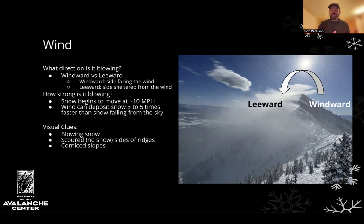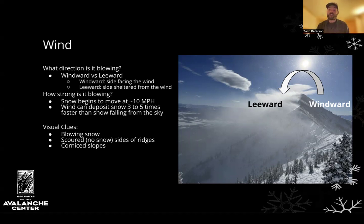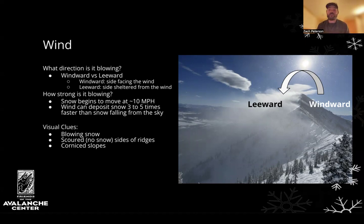Wind begins transporting snow at around 10 miles per hour and can actually deposit snow three to five times faster than snow falling from the sky. Similar to heavy snowfall, this increases the amount of weight on a potentially weak snowpack. Furthermore, wind-transported snow can be compacted into a stiff slab that creates an avalanche problem on its own, called a wind slab, and these avalanches can catch people off guard.